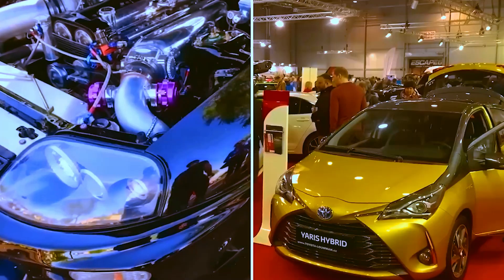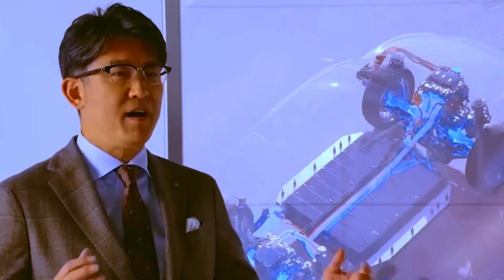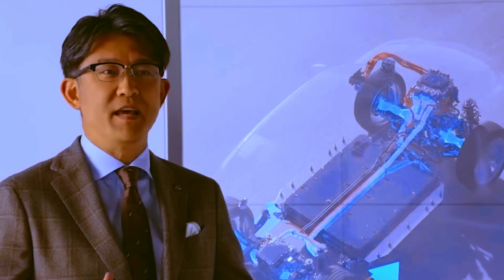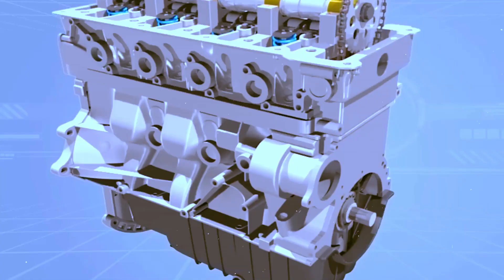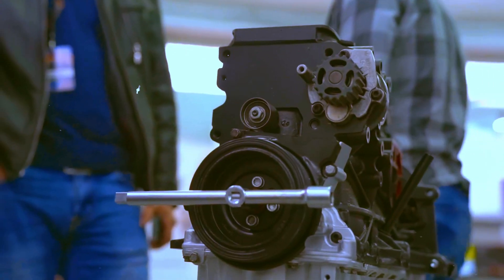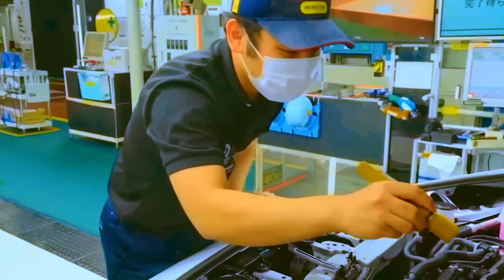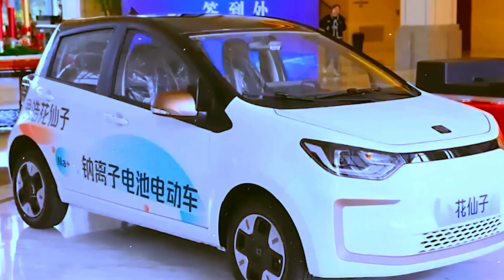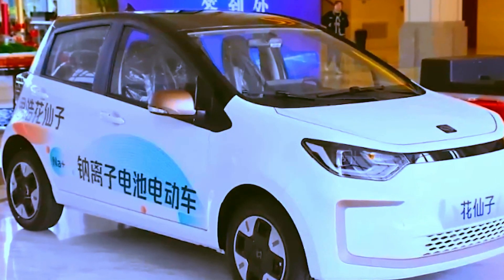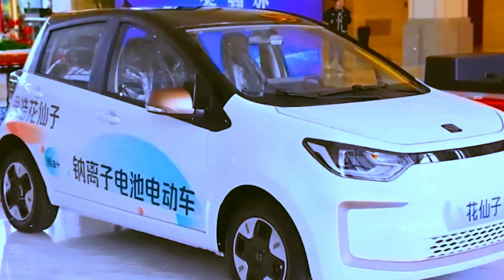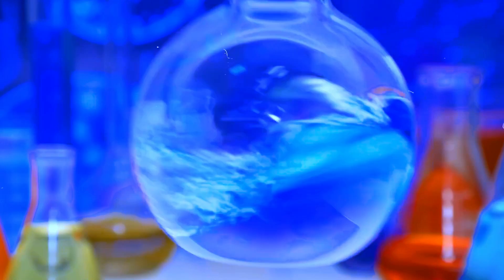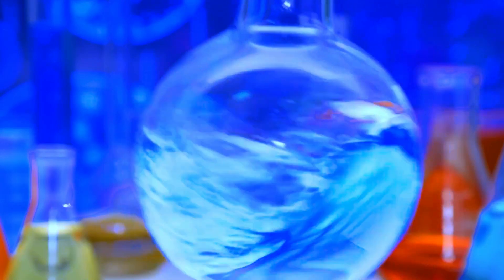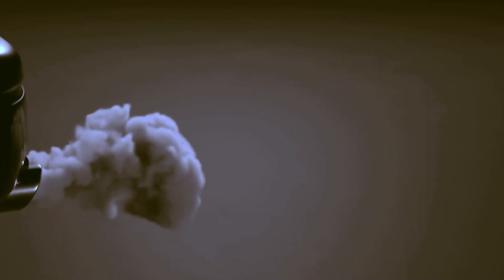It is also important to acknowledge that, while the developments in GAC and Toyota's ammonia engine technology are significant, there have been previous advancements in this field. About a decade ago, the Korean Energy Research Institute made notable progress by creating a vehicle called AMVE. This pioneering car used a blend of 70% ammonia and 30% gasoline, resulting in an impressive 70% reduction in carbon emissions.